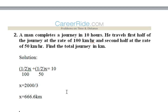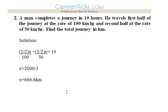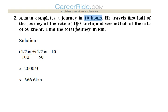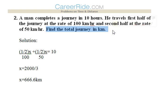Second question: a man completes a journey in 10 hours. He travels the first half of his journey at 100 km per hour and the second half at the rate of 50 km per hour. Find the total journey in kilometers.